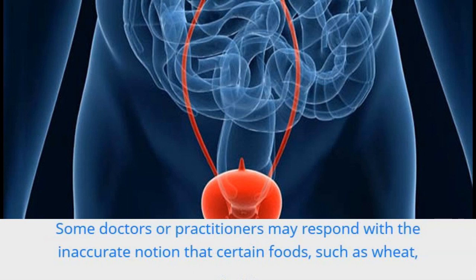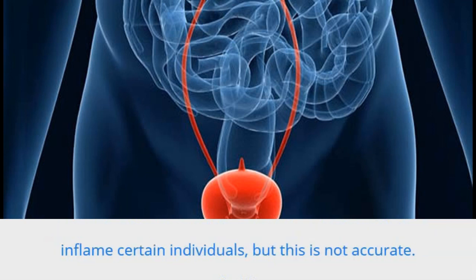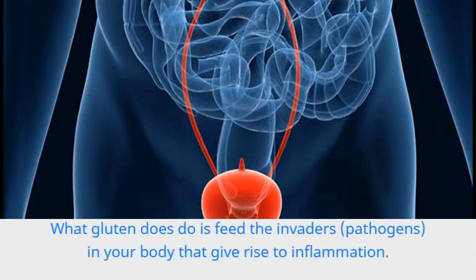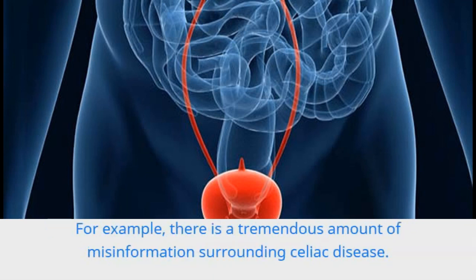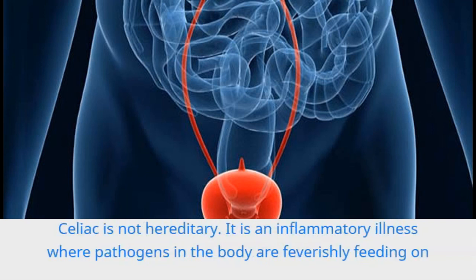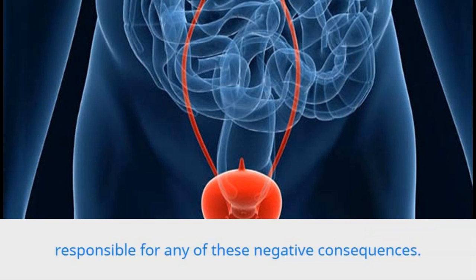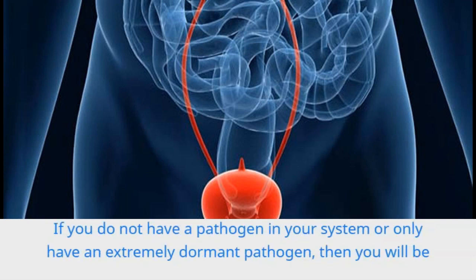Another reason for inflamed sinuses is streptococcus inside the sinus linings. Streptococcus, which can be nestled inside these linings since childhood, can create persistent mystery sinus inflammation. Some doctors or practitioners may respond with the inaccurate notion that certain foods such as wheat inflame certain individuals, but this is not accurate. Gluten itself does not inflame the body — what gluten does do is feed the invaders and pathogens in your body that give rise to inflammation. For example, there is a tremendous amount of misinformation surrounding celiac disease: celiac is not hereditary; it is an inflammatory illness where pathogens in the body are feverishly feeding on any gluten that's consumed.